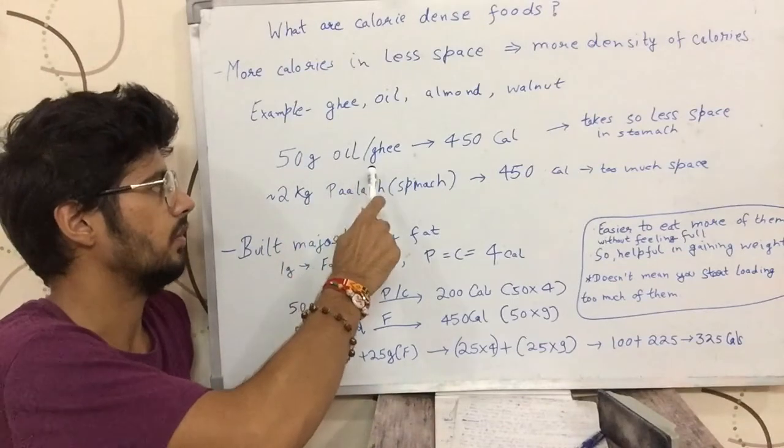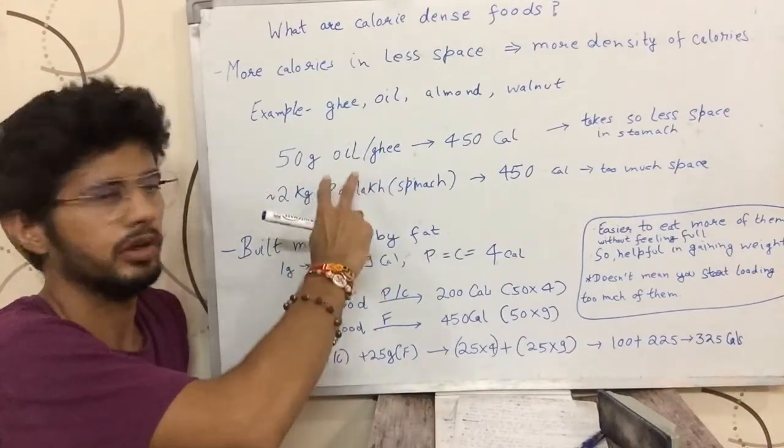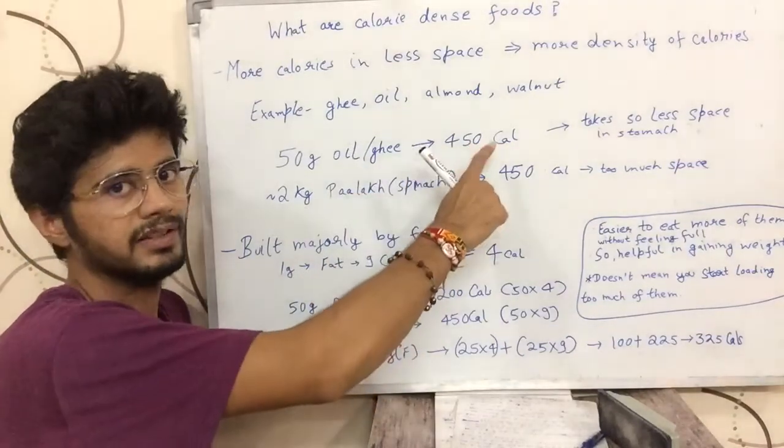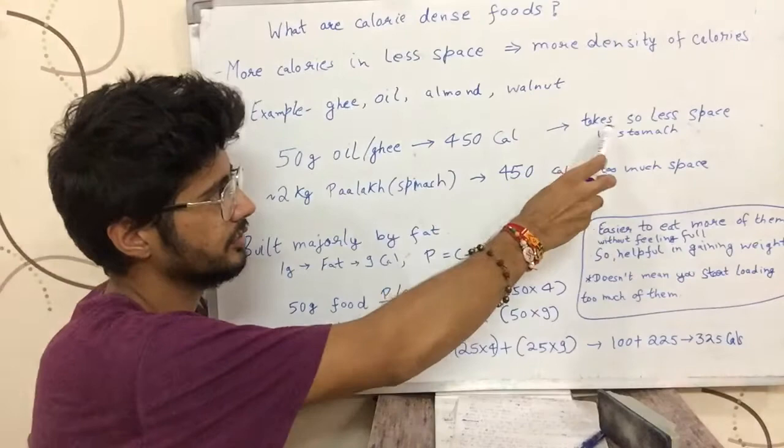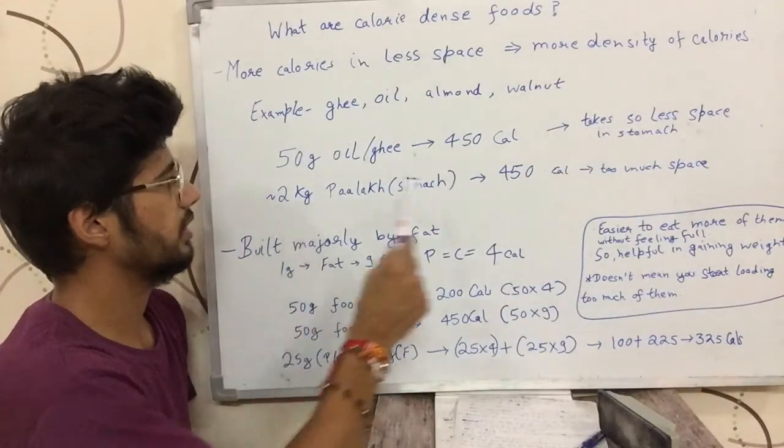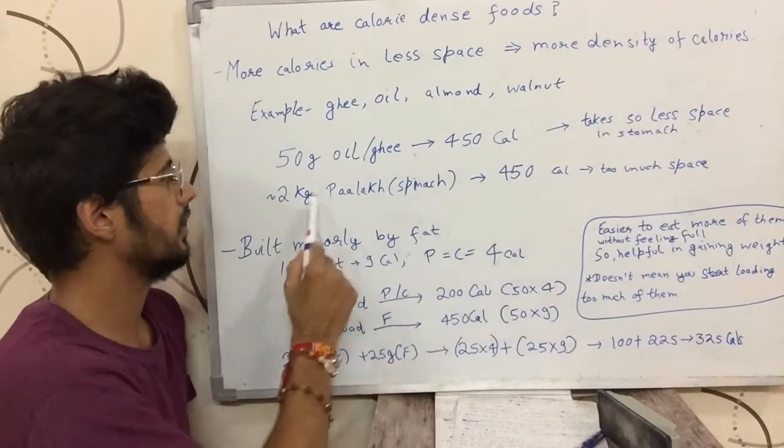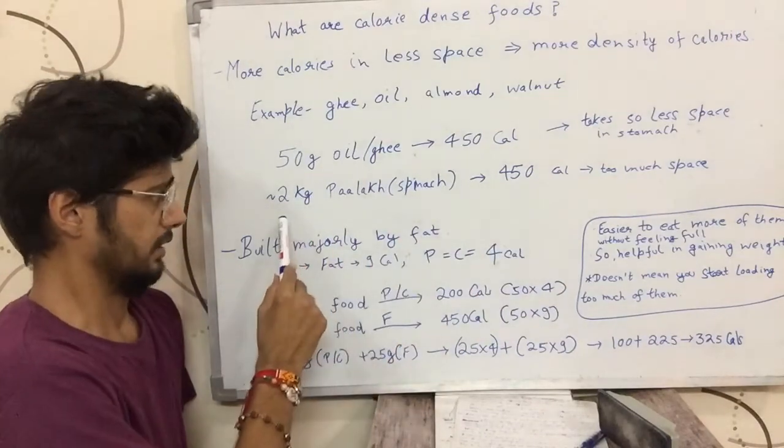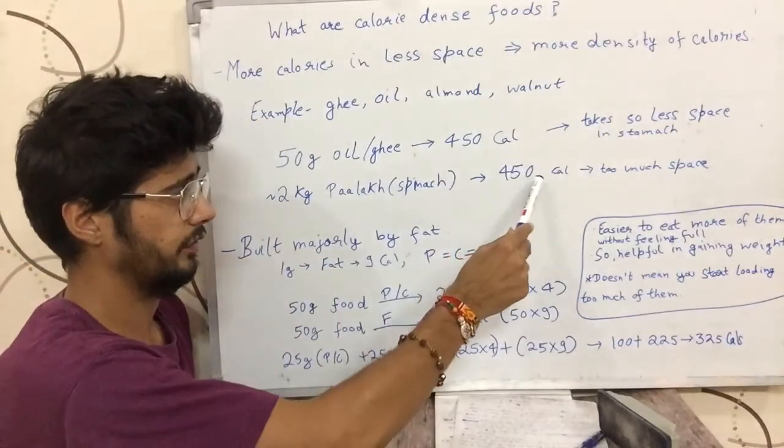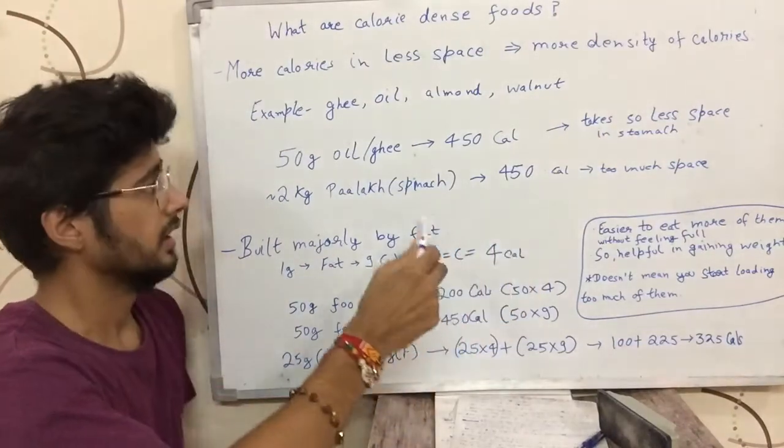50 grams of oil or ghee would have 450 calories. 1 gram of fat has 9 calories. I have explained that in previous videos. On the other hand, we would try to get those 450 calories from spinach. Around 2 kilograms of spinach would be required to get 450 calories from spinach.